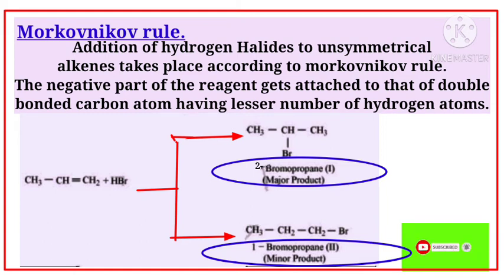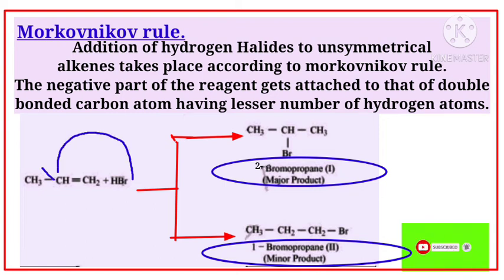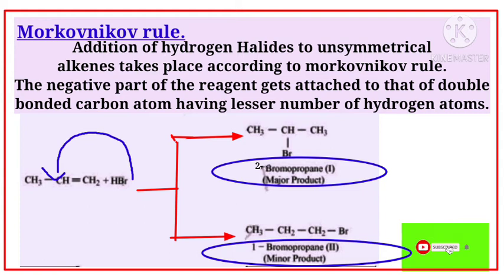The negative part of the reagent is Br⁻ and H⁺ is the positive part. The Br⁻ attaches to the carbon with the lesser number of hydrogen atoms. Between the two carbon atoms, the second carbon has fewer hydrogens, so bromine attaches to the second carbon — that gives us 2-bromopropane as the major product, with a small amount of 1-bromopropane as the minor product.